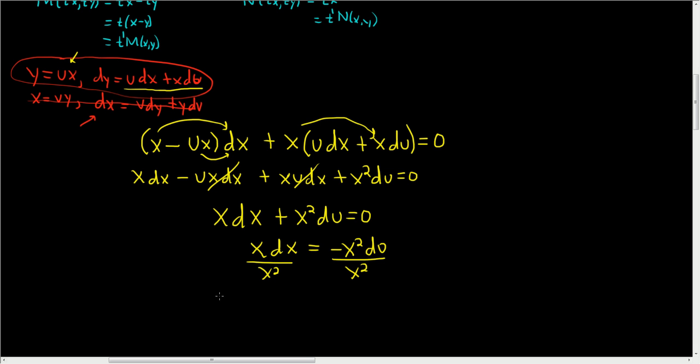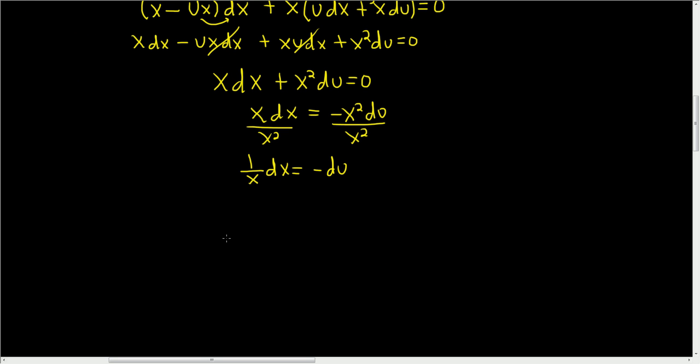we end up with 1 over x dx equals negative du, because x over x squared is 1 over x. Now we can integrate both sides.